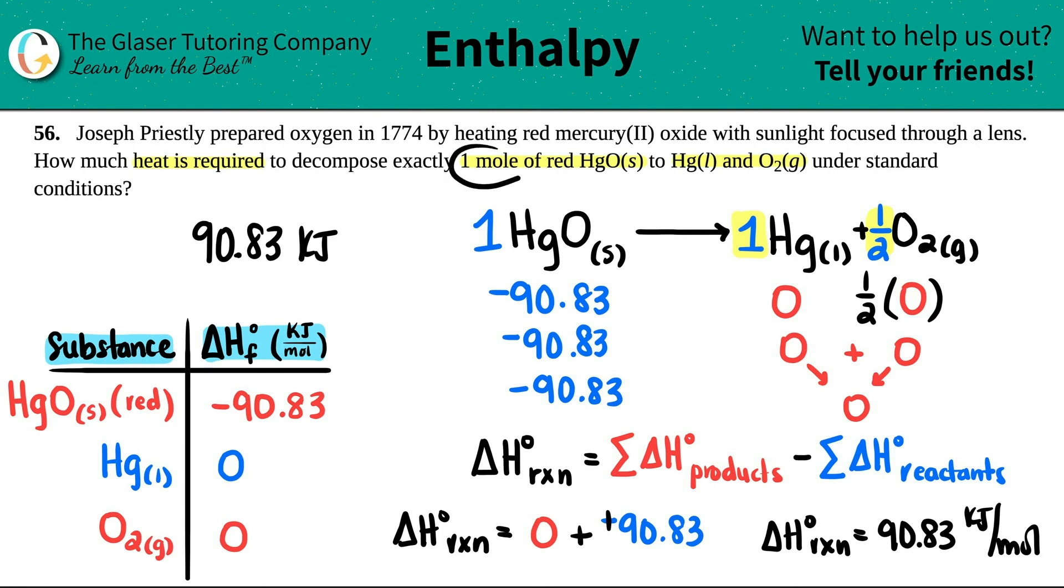You don't have to put the moles because you're saying that we already have one mole. All right? So that's it. 90.83 kilojoules. That's how much heat is required. And there you go. Hopefully, this helps. Let me know in the comments. Give this video a thumbs up. Subscribe to the channel if you want to. All right? If not, that's okay, too. I will see you in future lessons, and I hope you guys have a great day. See you later. Bye-bye.